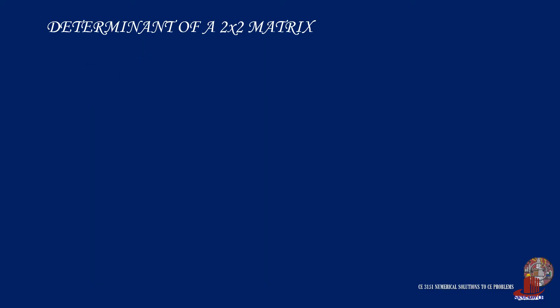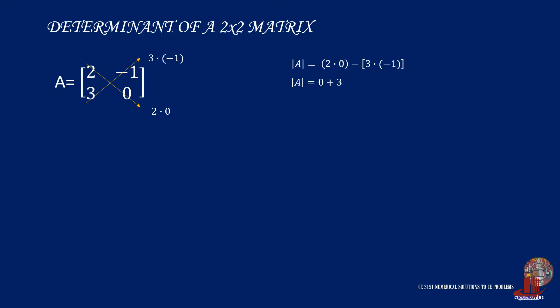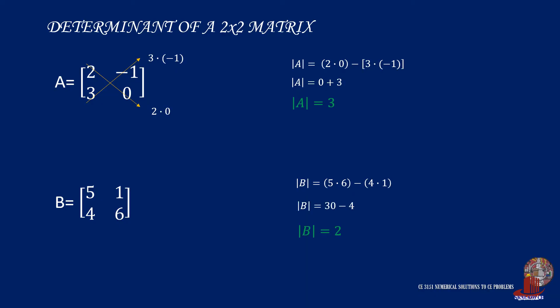Let's take some examples. For matrix A with the following elements, the determinant is computed as 2 times 0 minus 3 times negative 1. Simplifying, the determinant of matrix A is positive 3. For matrix B, we start with 5 times 6 minus 4 times 1, computed as 30 less 4, which simplifies to positive 26.